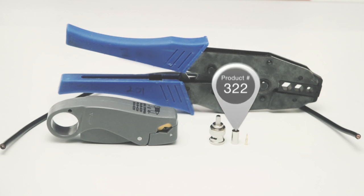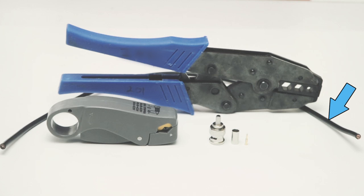For today's project we are going to need RG6 PVC cable, a three-piece BNC male connector, coax strip tool, and a crimp tool.